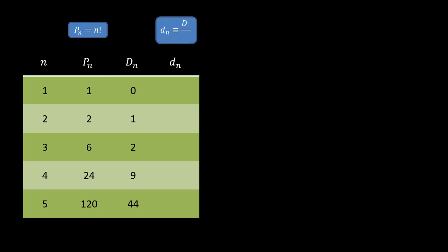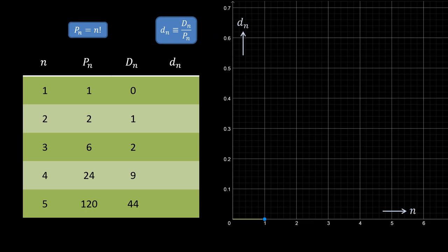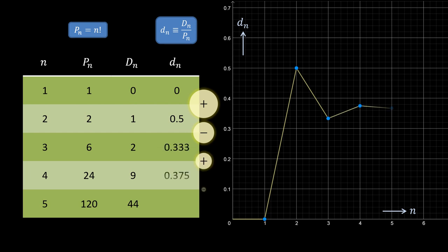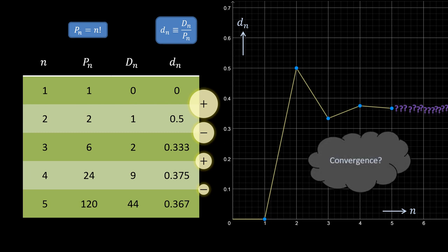A striking pattern emerges. The differences of consecutive probability values have alternating signs and apparently tend to zero while d_n stabilizes around a certain value, rather than increasing or decreasing forever, perhaps contrary to intuition.